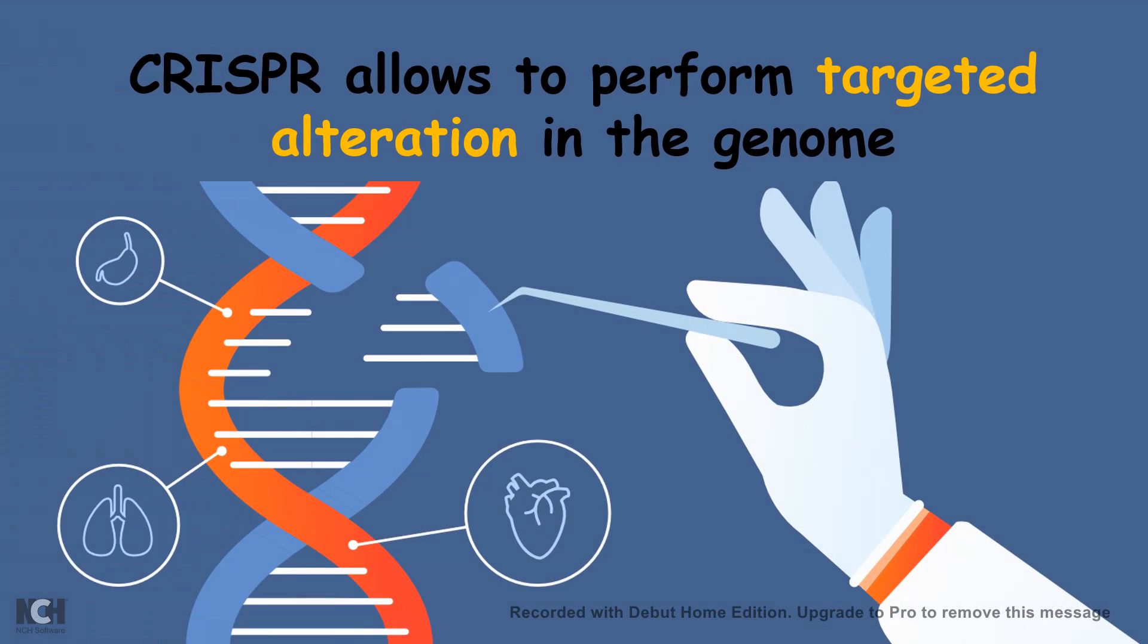CRISPR allows us to perform targeted alteration into the genome, and genome is a collection of all the genes present in a cell at a particular point of time. But how can this be achieved?